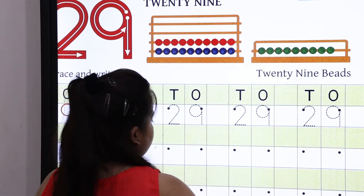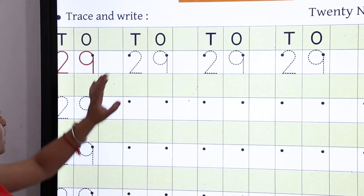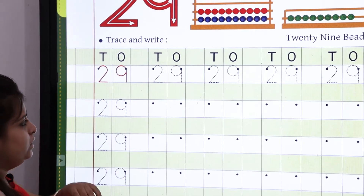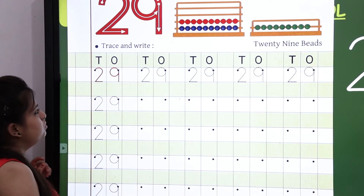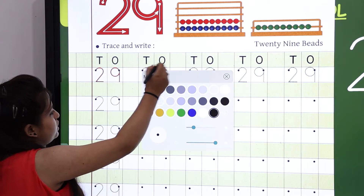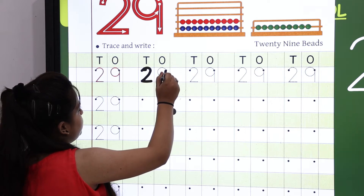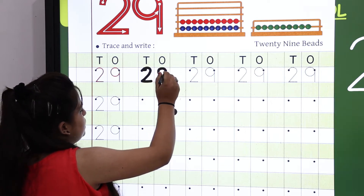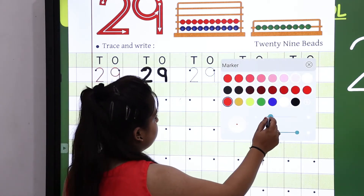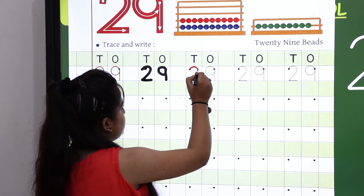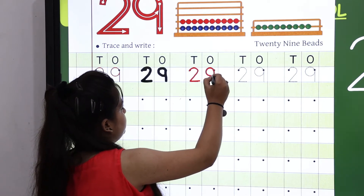Now we will look at the formations. How do we make 29? For 2, you need a curve and a sleeping line. And for 9, you need a standing line and a curve. One more time — for 9, you need a standing line and a curve.